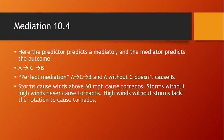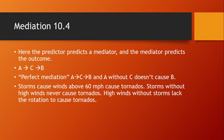10.4 covered mediation. Here the predictor predicts a mediator, and the mediator predicts the outcome — so A predicts C, which predicts B. Initially you might have thought A predicted B, but then you find there's a mediator that is the route by which A predicts B. In perfect mediation, A predicts C predicts B is true, and A without C does not predict B at all. An example I thought of: storms can cause winds above 60 miles an hour, which can cause tornadoes. Storms without high winds never cause tornadoes, and high winds without storms lack the rotation needed to cause tornadoes. So A doesn't directly cause B, but when A causes C, then it causes B.